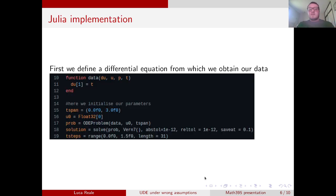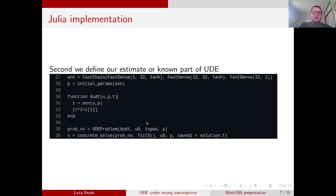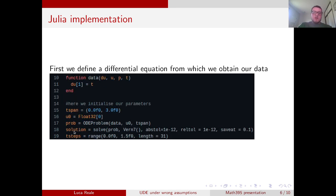So how did we implement this in Julia? Well, first, we had to define our differential equation from which we obtained our data. We defined it on an interval from 0 to 3, and we put the initial condition that at t₀, u₀ is equal to 0. We then defined our problem here and solved our ODE problem here.